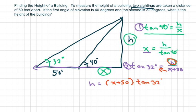All right. We also know what X equals from the first equation, so I'm going to substitute that in. So I get H equals X, so X is H over tan of 40 plus 50...